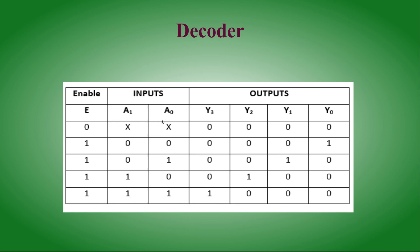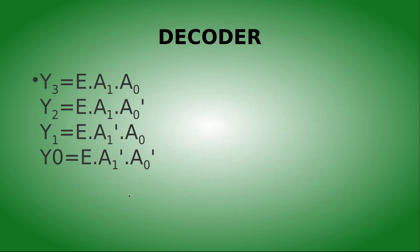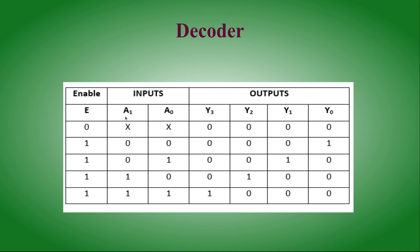For example, Y3 consists of inputs A1 and A0 both equal to 1, so Y3 = E · A1 · A0. Y2 consists of A1 and A0-bar, so Y2 = E · A1 · A0̄. Y1 is represented as E · Ā1 · A0, and Y0 is E · Ā1 · A0̄. The remaining outputs follow the same pattern.